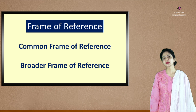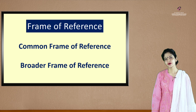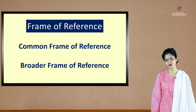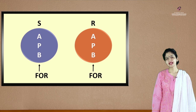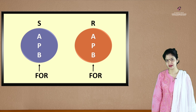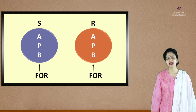There are three terms which we speak about. First is called the frame of reference, the second is common frame of reference, and the third is broader frame of reference. Let's get back to a simpler form of the communication loop we saw in the second slide. Here S stands for sender and R stands for the receiver. APB stands for the attitude, perception and beliefs of the sender.